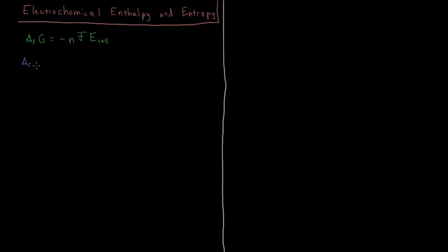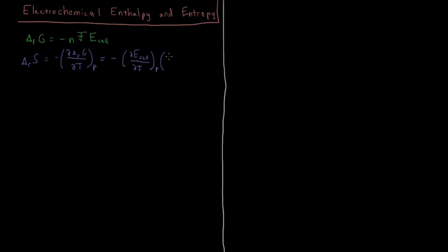Knowing the definition of entropy in terms of the Gibbs energy, we can say that the reaction entropy is equal to the minus partial derivative of the reaction Gibbs energy with respect to temperature at constant pressure. That's because entropy is the negative partial derivative of Gibbs energy with respect to temperature. For reaction entropy it's the same with reaction Gibbs energy, but we have this in terms of E cell as well, so we have to apply the chain rule.